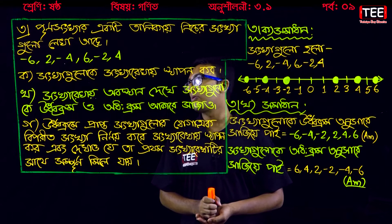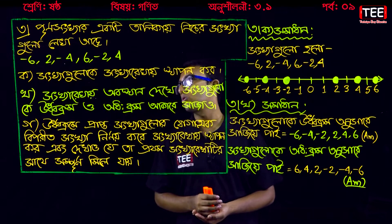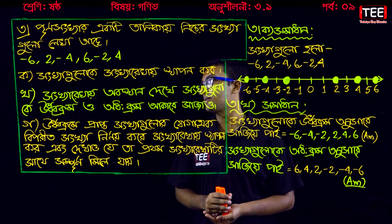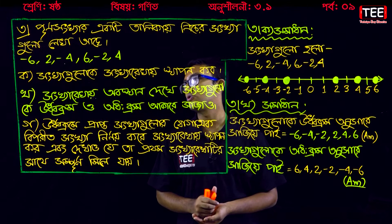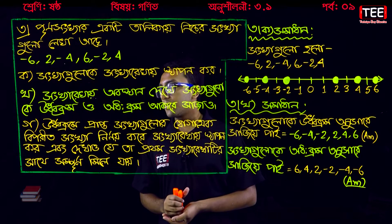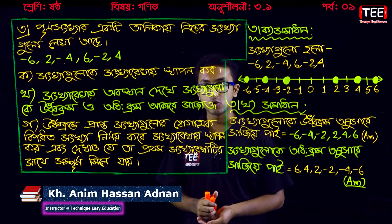We will write minus 6, 2, minus 4, 6, minus 2, 4. Now we will write minus 6, 2, minus 4, 6, minus 2, 4.